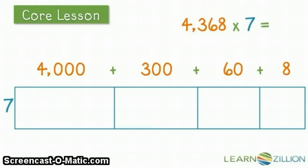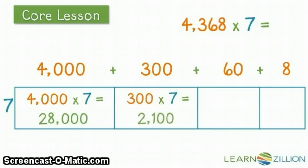Now again, I used the same process. I'm going to write the number sentence for each one of these sections. 4,000 times 7 equals 28,000. 300 times 7 equals 2,100. 60 times 7 equals 420.